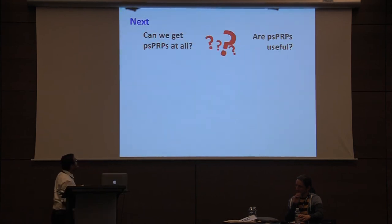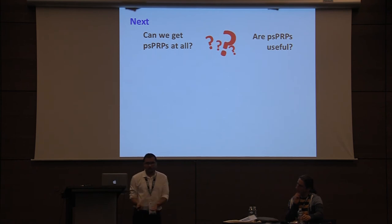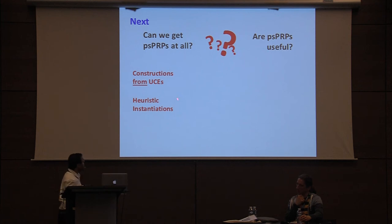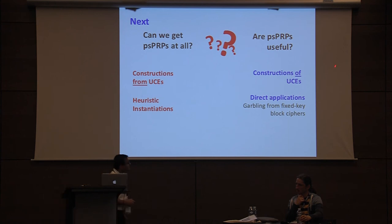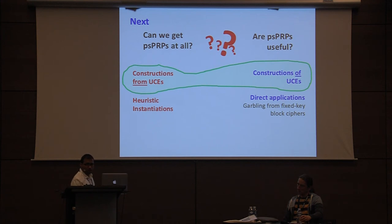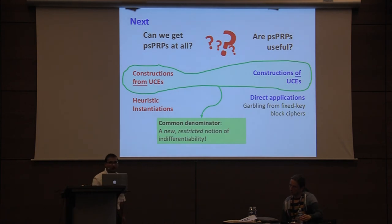So, constructions and applications. We come back to the two fundamental questions: can we have PSPRPs, and are they useful? To address the first question, we give constructions of PSPRPs from UCEs and also heuristic constructions validated in ideal models. To answer the second question, we construct UCEs, which allows us to recover all applications of the UCE framework from PSPRPs. As a direct application we study garbling from fixed-key block ciphers. Both reductions share a common technical denominator: a new restricted notion of indifferentiability called CP sequential indifferentiability.